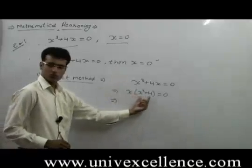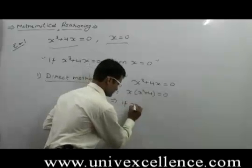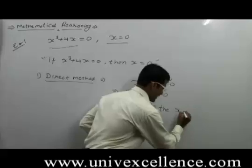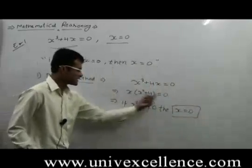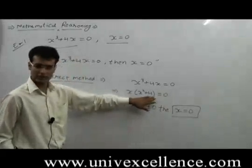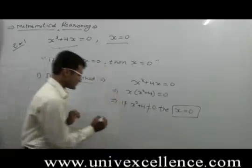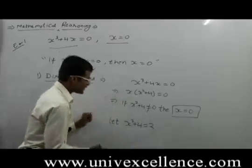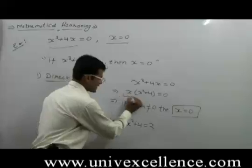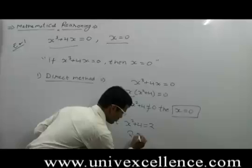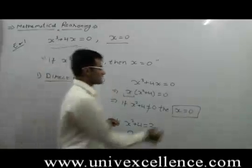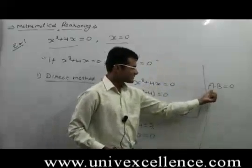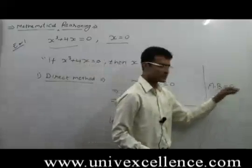In this case, if x square plus 4 is not equals to 0, then x is equals to 0. To make this equation equal to 0, if x square plus 4 gives you some value like 2, then x must be equals to 0, giving 2 into 0 equals to 0. The concept is: if a into b equals to 0, then either a is equals to 0 or b is equals to 0.